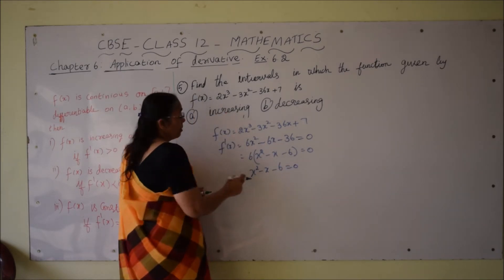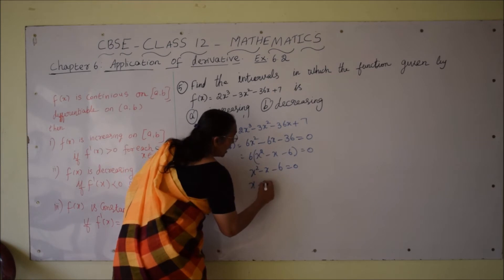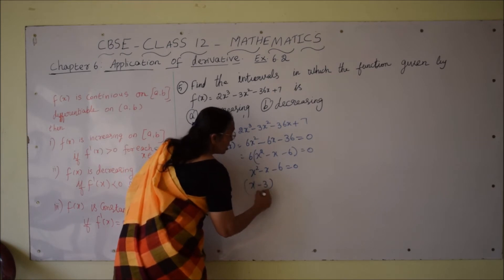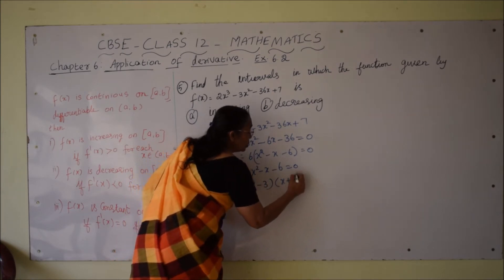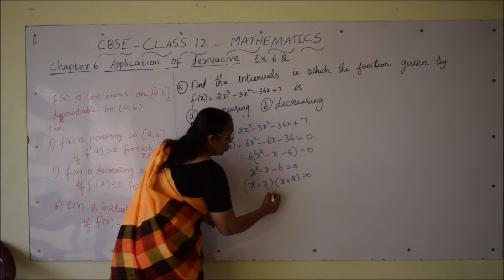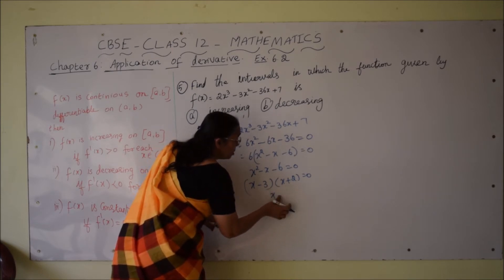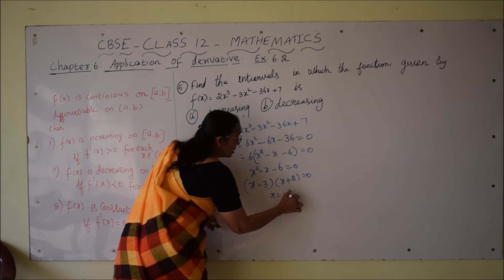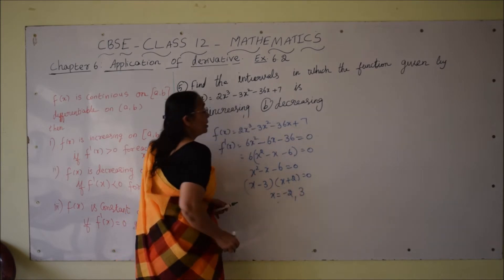By factorization we get (x - 3)(x + 2) = 0, giving two values of x. The turning points are x = -2 and x = 3.